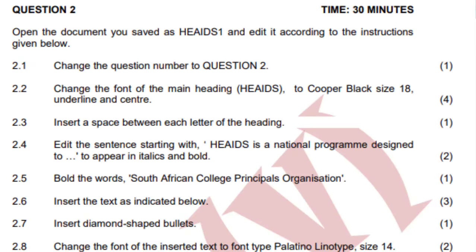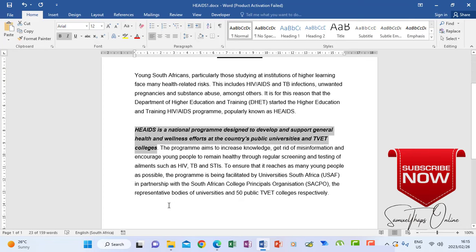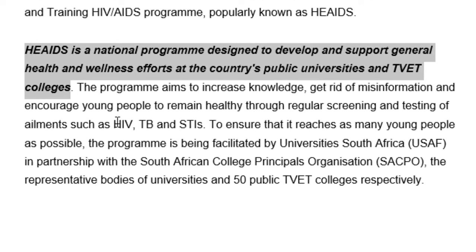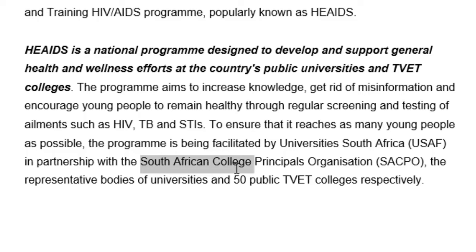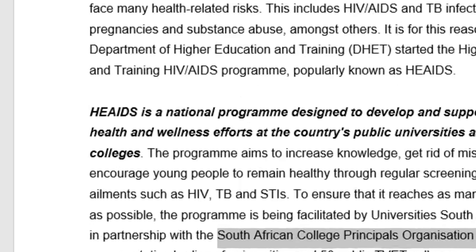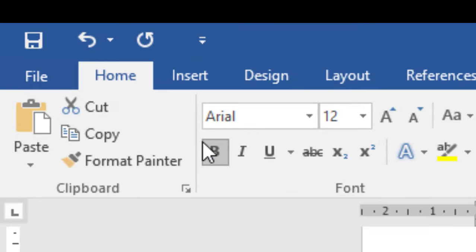And then bold the words 'South African College Principals Organization.' So when I look there on my paragraph, I have to see the text according to the instruction. There it is — South African College Principals Organization. So this one, after highlighting it, I will just have to go and make it bold as instructed.